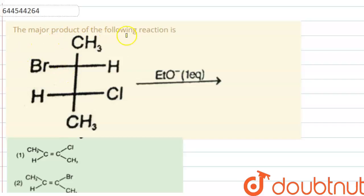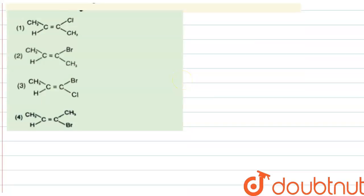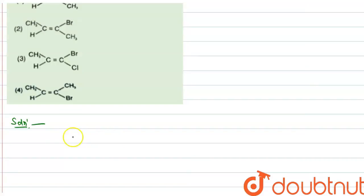The question given here is the major product of the following reaction. The compound reacts with one equivalent of ETO minus. ETO minus is the base, so it extracts the acidic hydrogen and since it is present in one equivalent, it extracts one hydrogen atom from the compound.